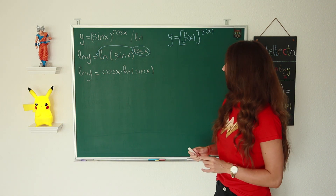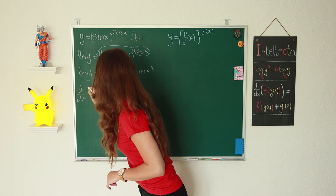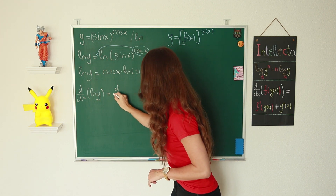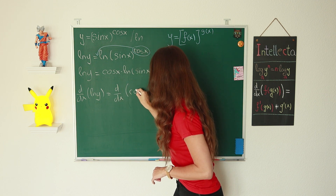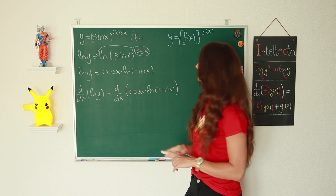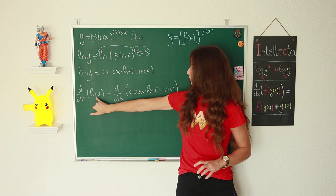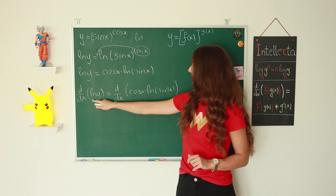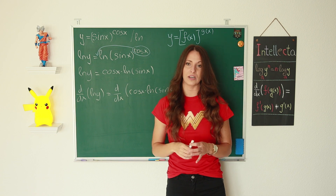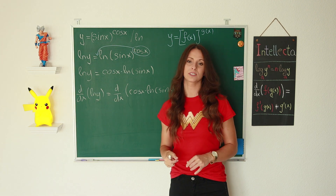Now let's apply the second step: differentiate both sides. So we have d/dx of ln(y) equals d/dx of cosine(x) times ln(sin x). On the left side, we need to find the derivative of ln(y), and here we have a composite function — a function that depends on another function. To find the derivative of a composite function, we have to apply the chain rule.